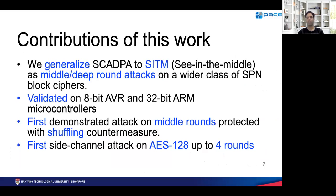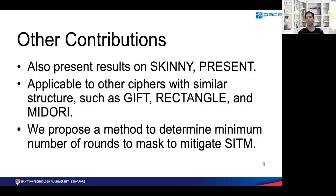In this paper, we generalize CARDPA-like attacks in the form of SITM to a generic middle or deep round attack on a wider class of SPN block ciphers. We validated these attacks on 8-bit AVR and 32-bit ARM microcontrollers. We also claim to be the first ones to demonstrate this attack on middle rounds protected with shuffling countermeasures, and also attacking complex ciphers like AES-128 up to as deep as four rounds. The attack can also be extended to other ciphers like GIFT, RECTANGLE, and MIDORI, and we propose a methodology to compute the minimum number of rounds to mask to protect against SITM.